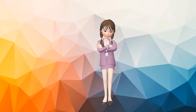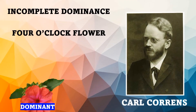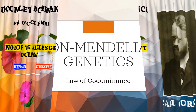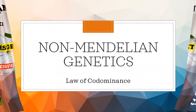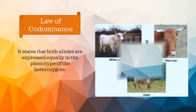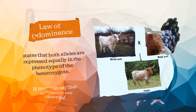Good day learners, welcome to our new lesson. In our previous lesson we talked about incomplete dominance, where the dominant trait is not completely dominant over the other alleles. For today's video we are going to talk about another non-Mendelian pattern of inheritance, which is co-dominance. The law of co-dominance states that both alleles are expressed equally in the phenotypes of the heterozygote — meaning both traits are observed.